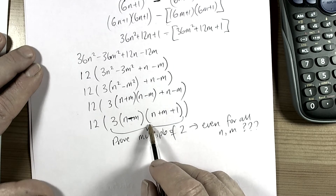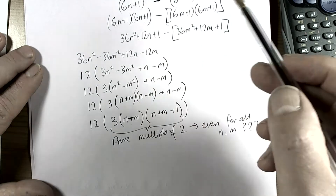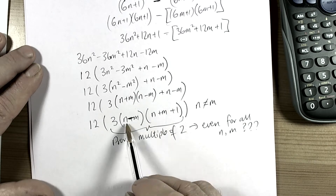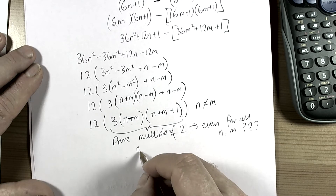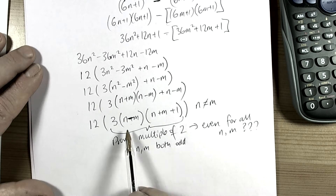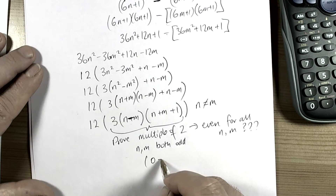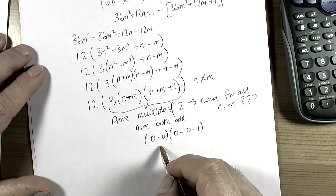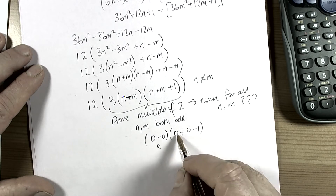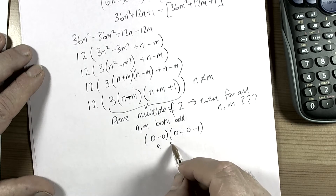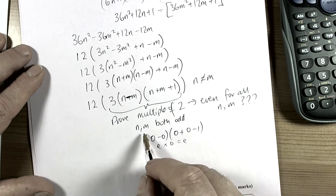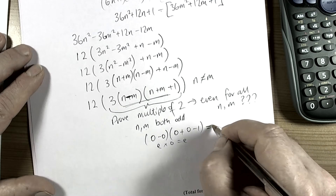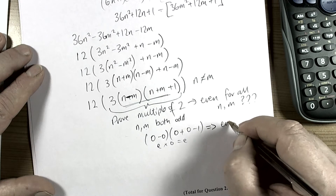Assuming n ≠ m, since any two terms means they must be different terms. Let's see what happens when n and m are both odd. An odd minus an odd — for example 5 − 3 — is always even. An odd plus an odd — for example 3 + 3 — is always even, and even + 1 is odd. An even times an odd is always even. So if n and m are both odd, this will always be even, and 3 times even is always even.